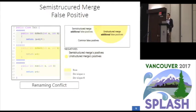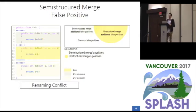Moreover, given that the set of conflicts reported by Semi-Structured Merge in previous studies is often smaller, but not a subset of the set of conflicts reported by Unstructured Merge, Semi-Structured Merge could even introduce other kinds of false positives that might be harder to resolve than those it eliminates. For instance, renames challenge Semi-Structured Merge because its algorithm is not able to match renamed elements, such as renamed method declarations. The algorithm assumes there was a deletion and reports a false positive when the other developer also changed that declaration body.